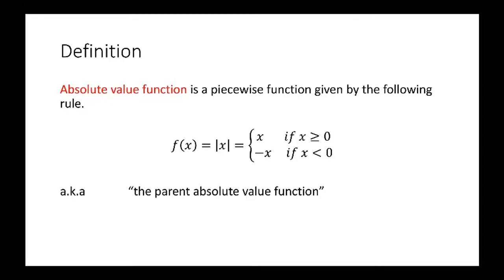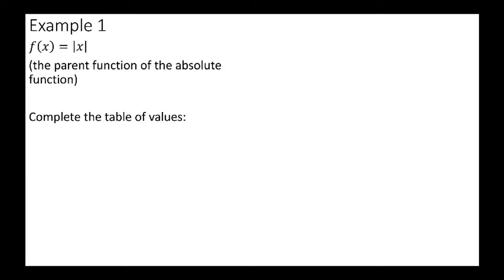It's also known as the parent absolute value function — you'll see that in your homework, tests, and quizzes. I used to call it the V-looking graph or the V formation, because when you graph it, it really looks like a V. Example 1: f of x equals the absolute value of x — the parent function of the absolute function. We're going to complete a table to show the coordinates and how we get the V-looking graph.